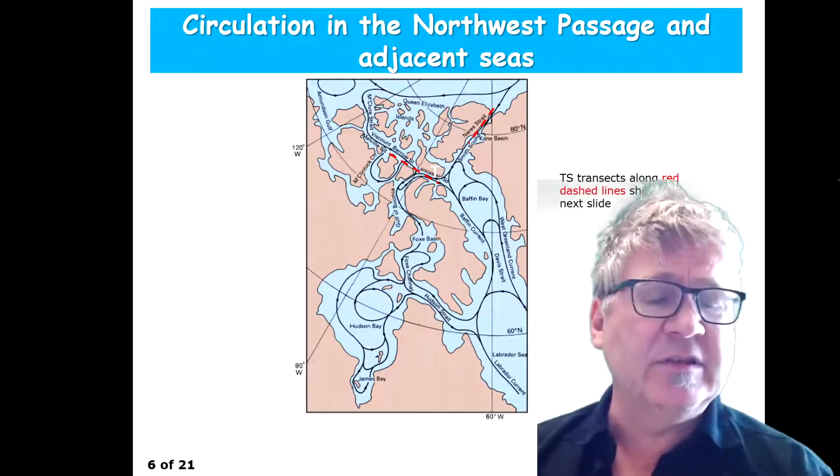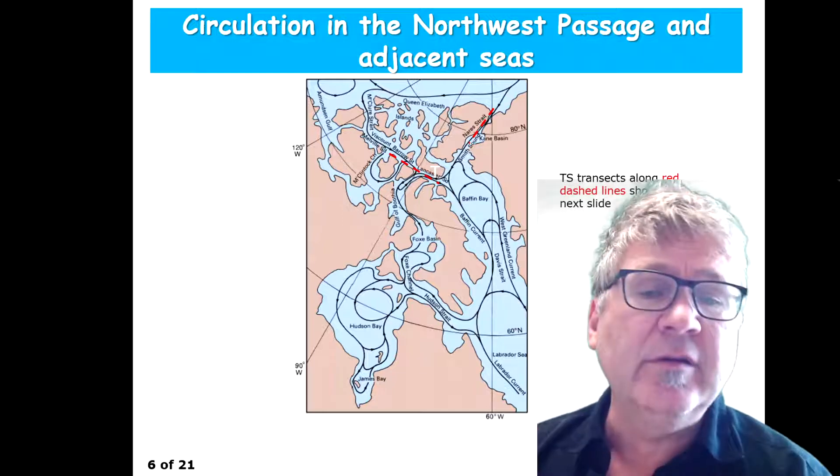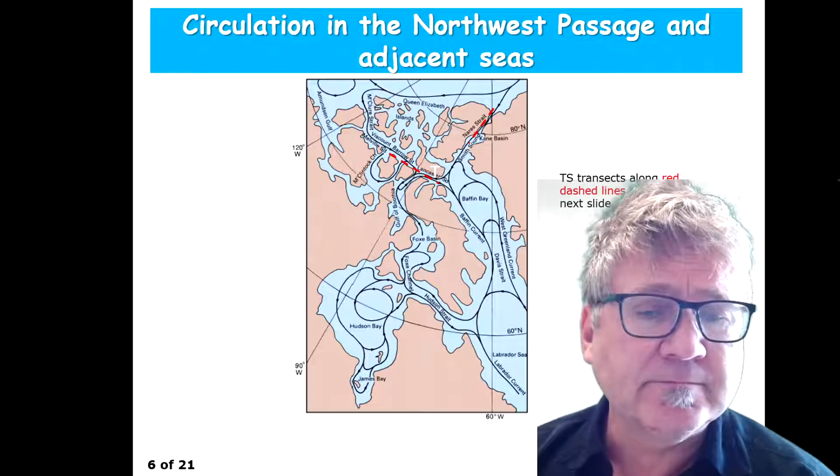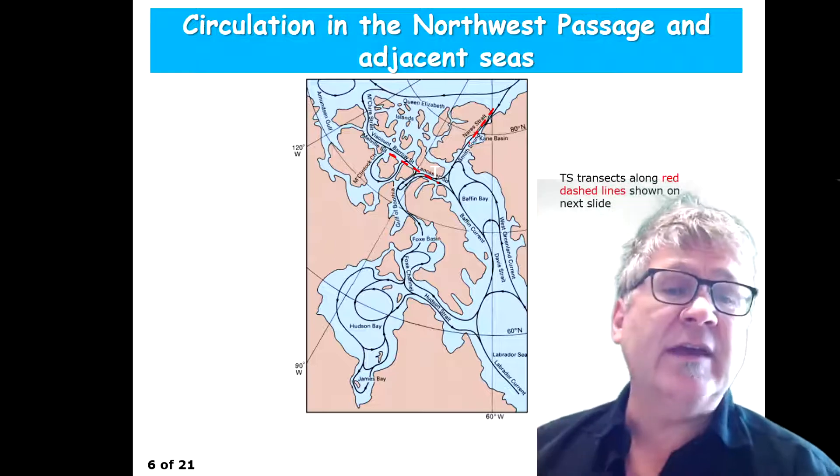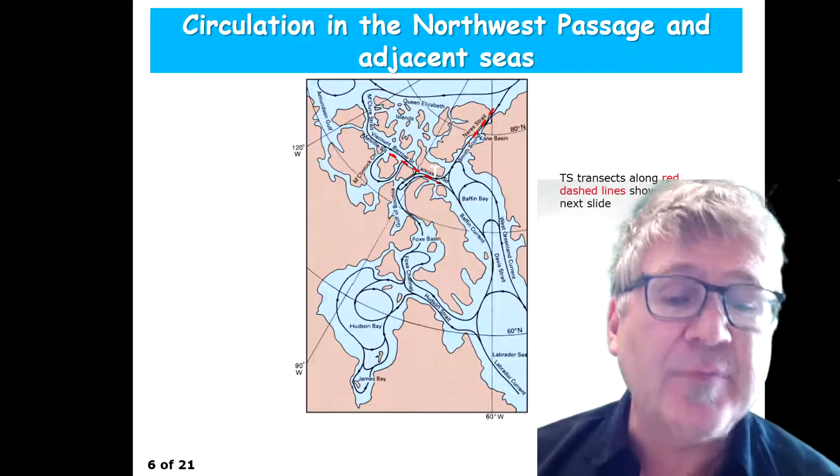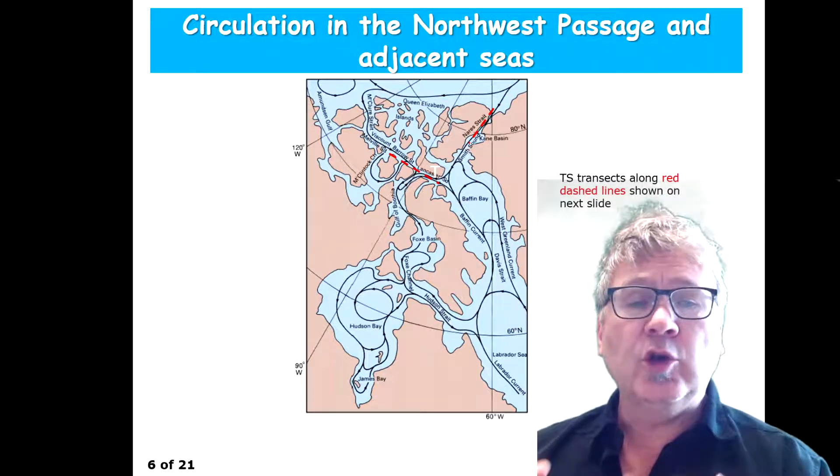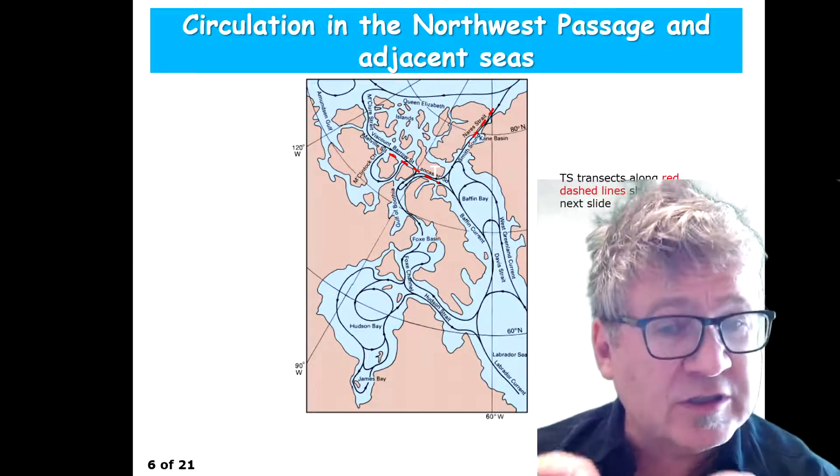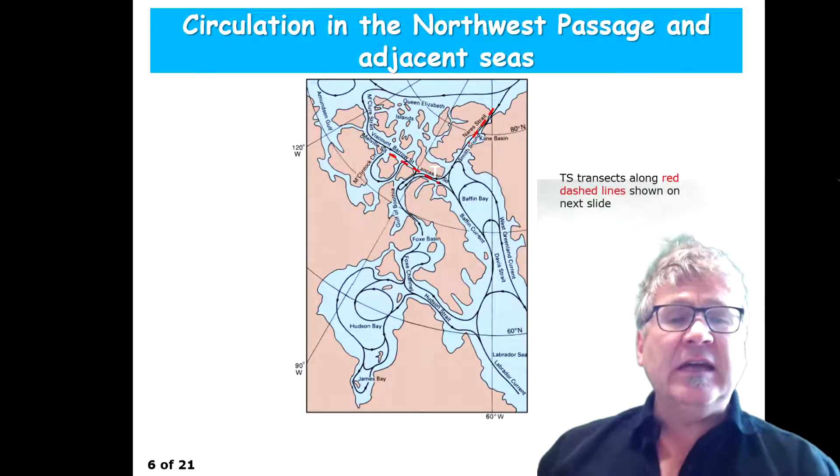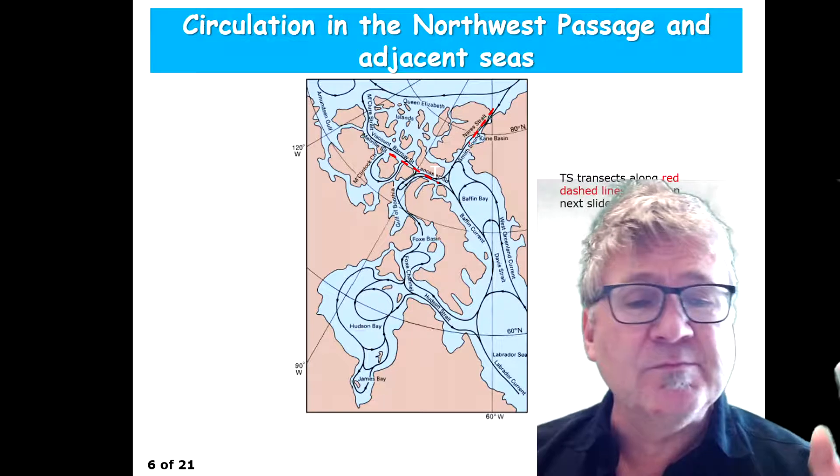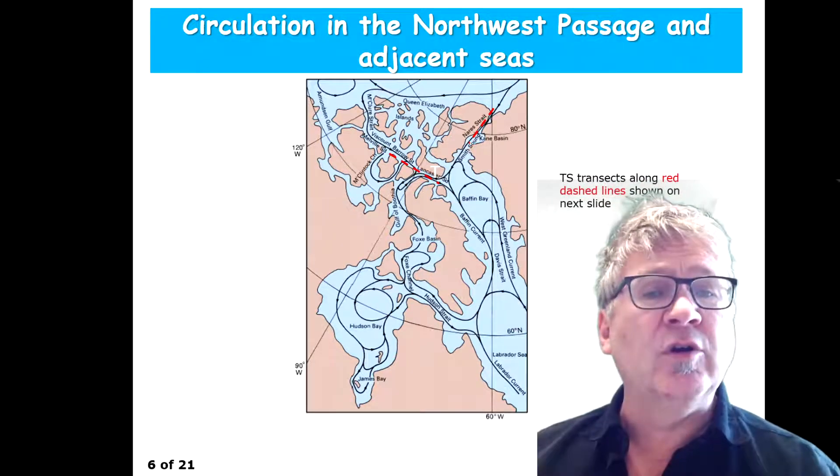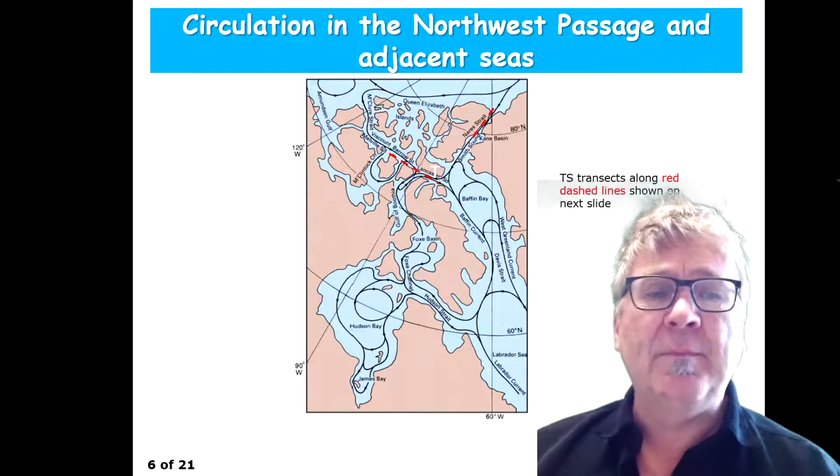I just want to show you examples of a region which is very complex, which connects the Labrador Sea to the Arctic Ocean. Similar to the Indonesian through-flow, it has many different channels and straits and many islands. It's called the Northwest Passage.